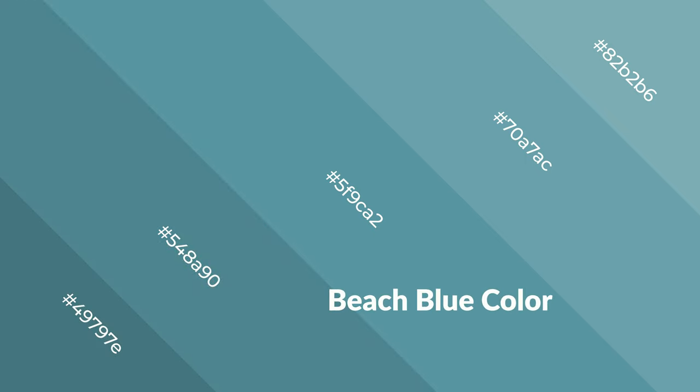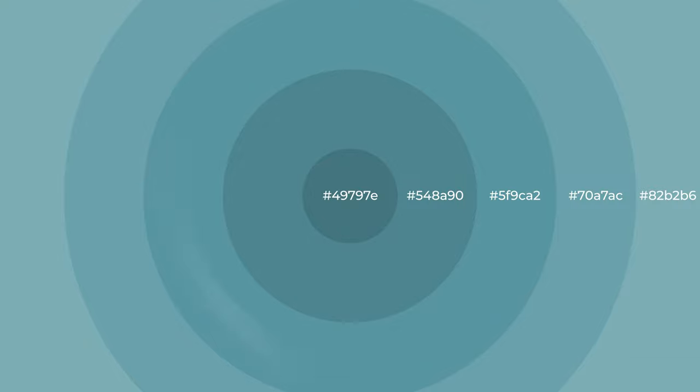Cool colors are like water, ice, sky, grass, soft and snow. You can see them used in baby products.